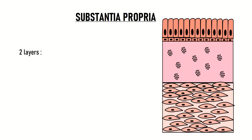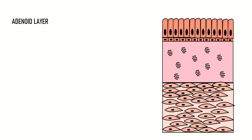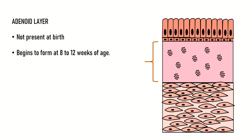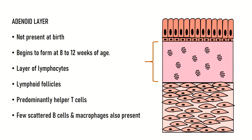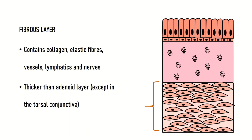The second layer of the conjunctiva is known as the substantia propria, or stroma. It consists of two layers: a superficial adenoid layer and a deeper fibrous layer. The adenoid layer is not present at birth — it begins to form at 8–12 weeks of age. It is a thick layer of lymphocytes and gets stimulated by viral or chlamydial infections of the conjunctiva to form lymphoid follicles. That is why, before three months of age, lymphoid follicles are not seen in cases of conjunctivitis. These lymphocytes are predominantly helper T cells, with few scattered B cells and macrophages also present. The fibrous layer has collagen, elastic fibers, vessels, lymphatics, and nerves. It is thicker than the adenoid layer, except in the tarsal conjunctiva where it is very thin.